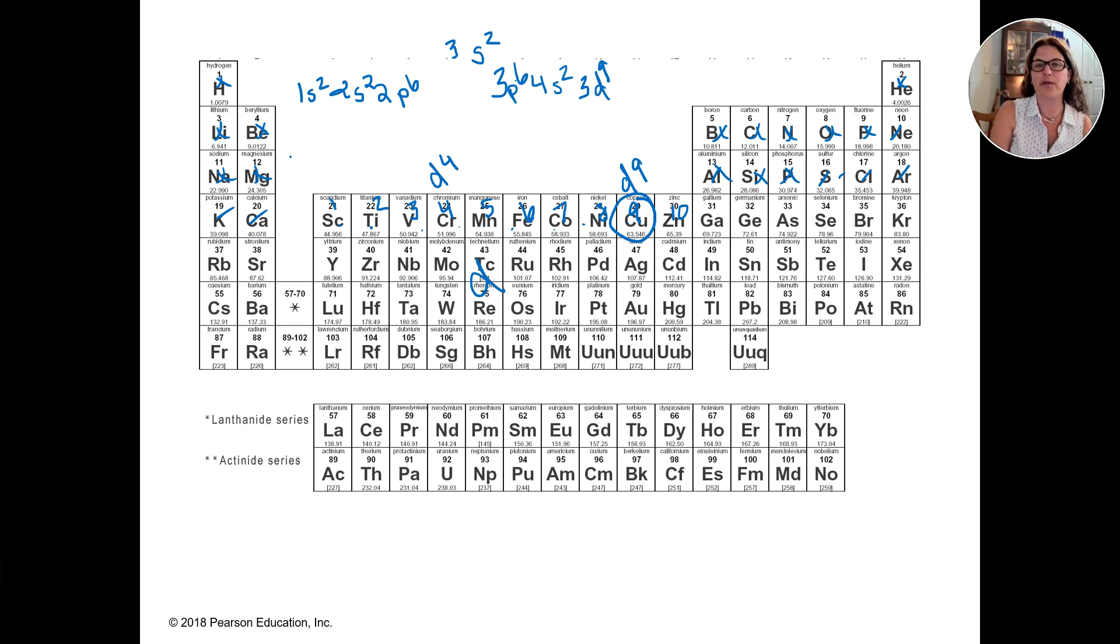So the electron configuration for copper is actually 1s2, 2s2, 2p6, 3s2, 3p6, 4s1, 3d10.